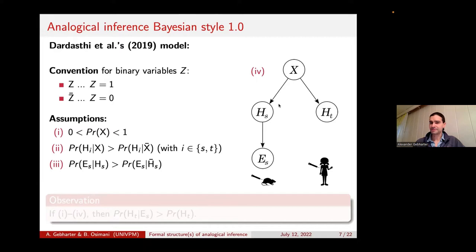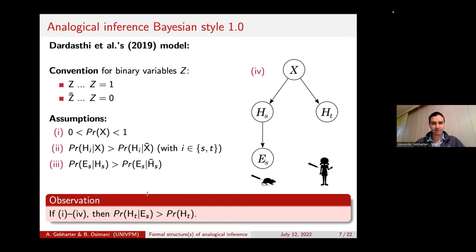One of the core assumptions is that the Bayesian network here correctly represents the structure of this type of inference. One of the main achievements in their paper is showing that if all four assumptions are in place, then whenever we observe the evidence ES about the source system, the probability for the hypothesis about the target system HT goes up and we have some confirmatory impact. So analogical inference, under these assumptions, just reduces to Bayesian updating.